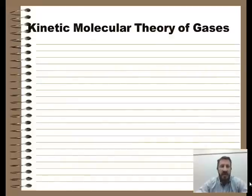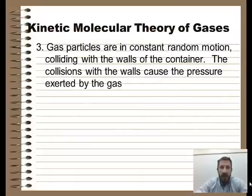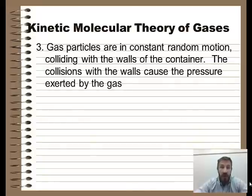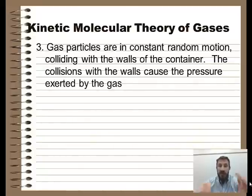The third tenant of the kinetic molecular theory is that gas particles are in constant random motion, colliding with the sides of the container. The collisions with the sides of the container are what cause the pressure exerted by the gas. So when those particles hit the side of the container, that's where the pressure comes from — those collisions.